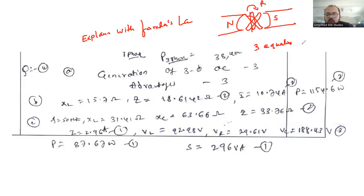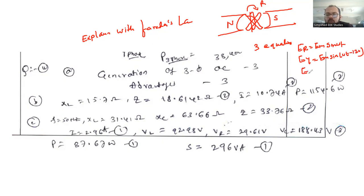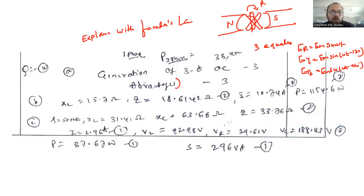What are the three equations? For example, ER is equal to Em sin(ωt). Then EY is equal to Em sin(ωt − 120°). There is a third equation as well. These equations you are supposed to explain.